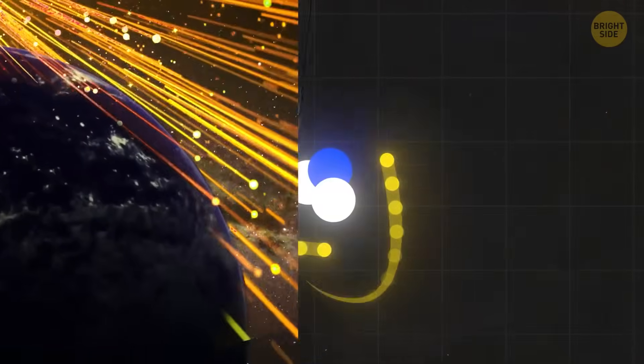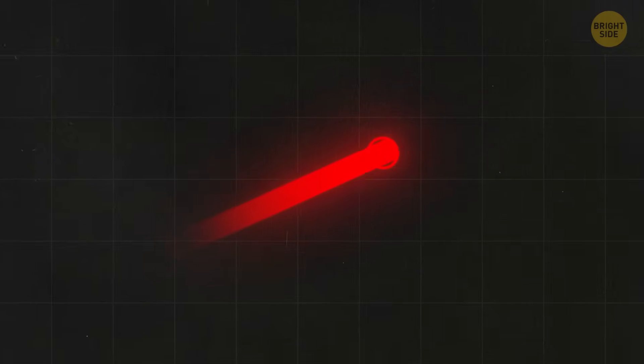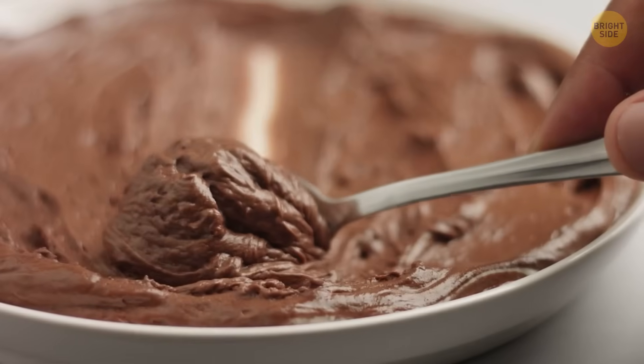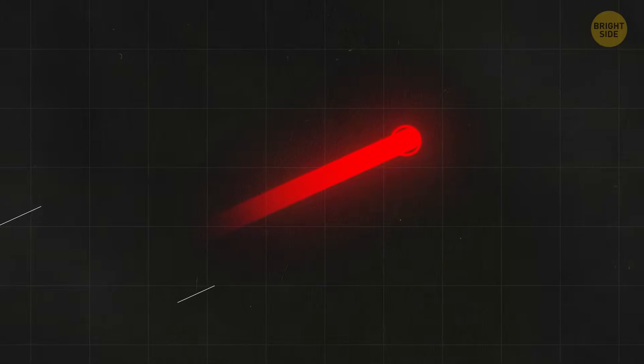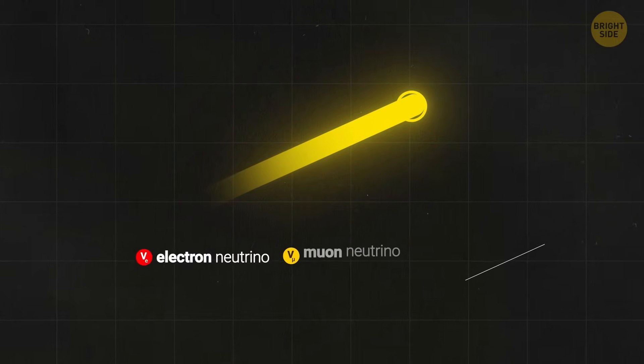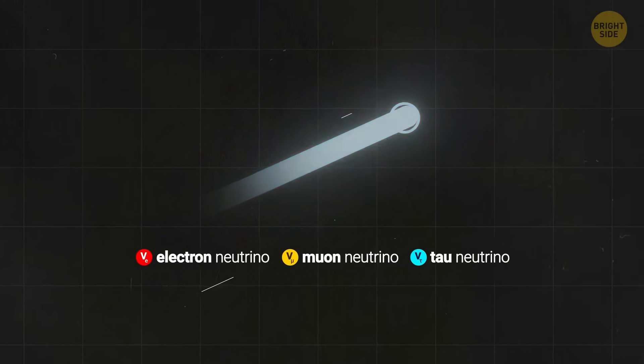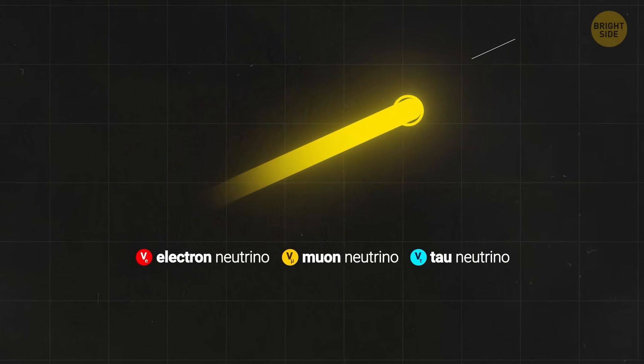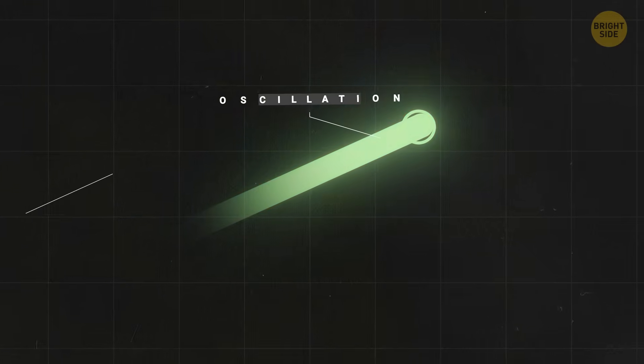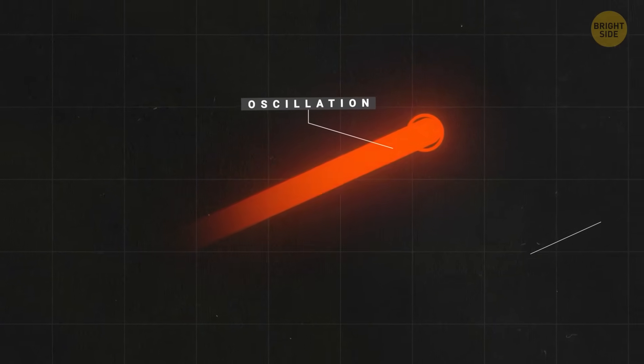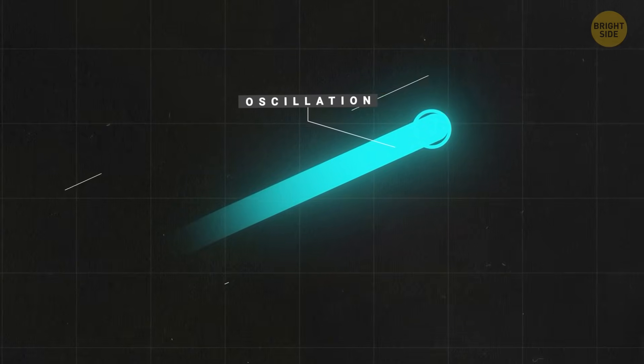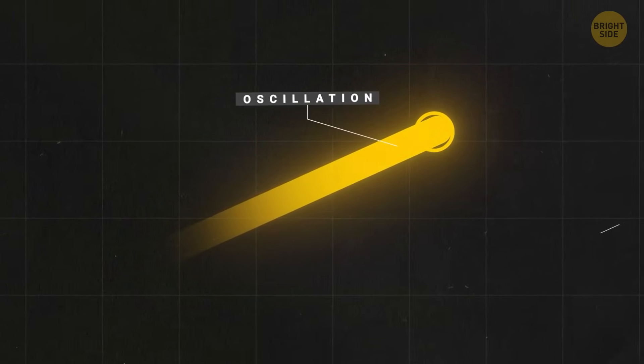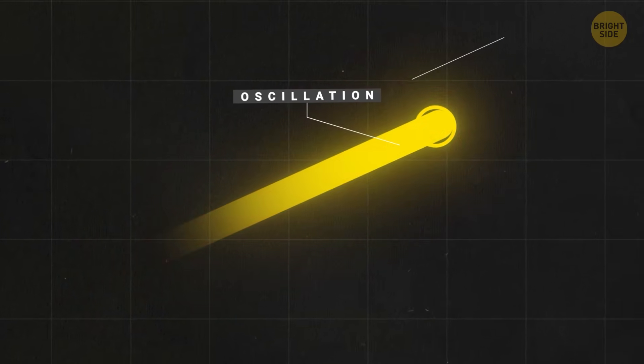Neutrinos are also special because they don't behave like most particles. They come in three flavors, chocolate, strawberry, oops, I meant to say electron neutrino, muon neutrino, and tau neutrino, and can switch between these types as they travel. This behavior, called oscillation, is linked to their mass, and it's a mystery. No one knows exactly how much a neutrino weighs, or even which type is the heaviest.